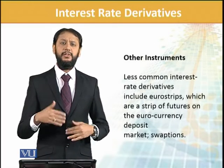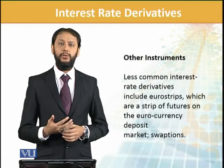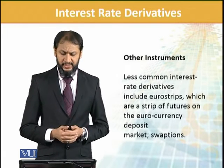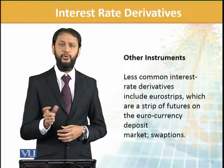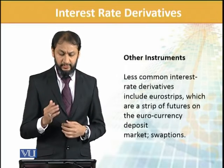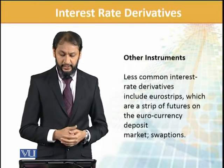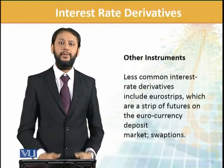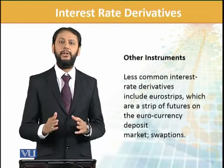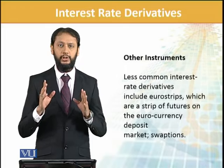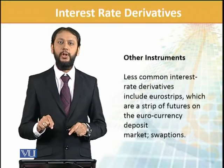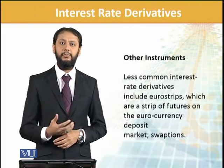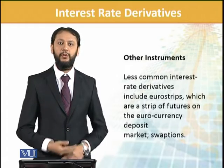Other instruments that are not as frequently used, but there are many — as we discussed, these go from very simple to very complex. Other ones include Euro strips, which are future strips in foreign currency and also linked with Euro currency; and there is also a swaption, which is an option on a swap. So there are multiple ways in which interest rate exposure can be captured. We will keep studying these in different places, but you should keep in mind that there are many ways to capture it, and it is an important element for every kind of business involved in investment. Thank you.